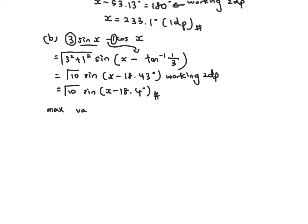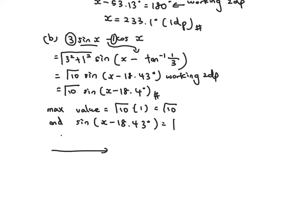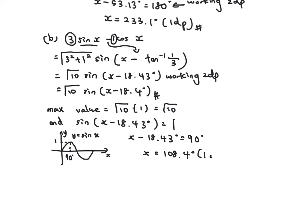The maximum value of the whole expression is √10, since the max value of the sin graph is 1, so √10 × 1 = √10. This occurs when the sin value is 1. Drawing the sin graph, the angle that gives sin = 1 is 90°. So x − 18.43° = 90°, which means x = 108.4°, rounded to 1 dp for the final answer.